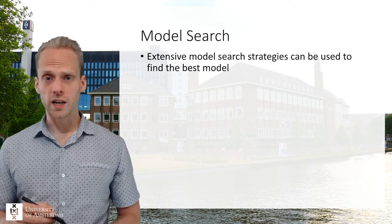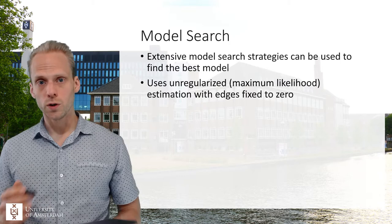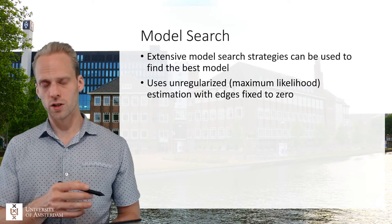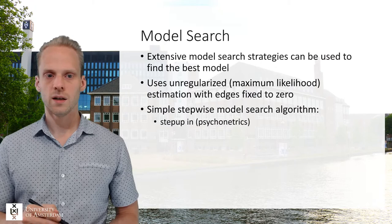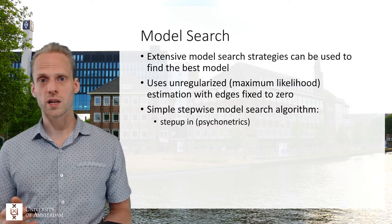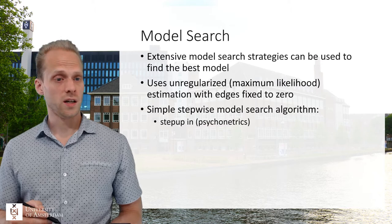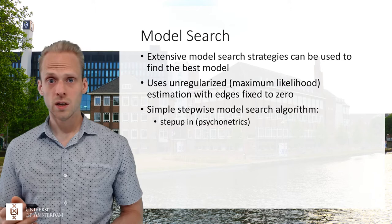This usually uses unregularized estimation, so what we do is we constantly refit the model using maximum likelihood estimation, but with certain parameters fixed to zero, having certain edges fixed to zero. So in this case we fit this model but this edge is fixed to zero, and there are many different ways you can do this. The simplest form would be a step-up algorithm, and one of those is implemented in the psychonetrics package in the step-up function, where we use modification indices from structural equation modeling to see which edge would be best to add to a network.